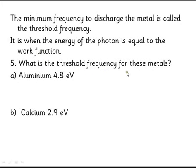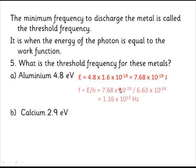So we can work out the threshold frequency for metals. Again, just a couple more examples. Aluminum is 4.8 electron volts. What are our steps? Well, first of all, we've got to turn that into joules. So we multiply it by this conversion factor again to turn the electron volts into joules. Then we've got to turn the joules into a frequency by doing f equals E over h.